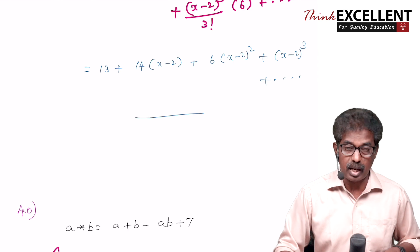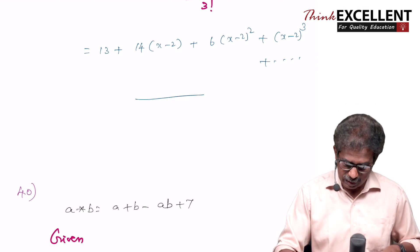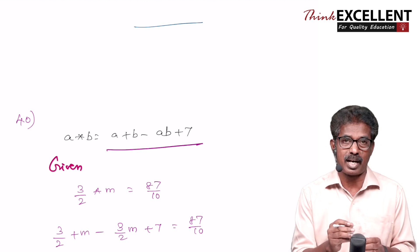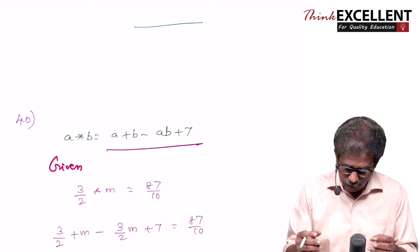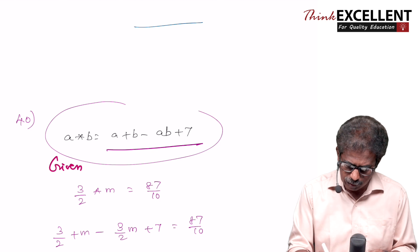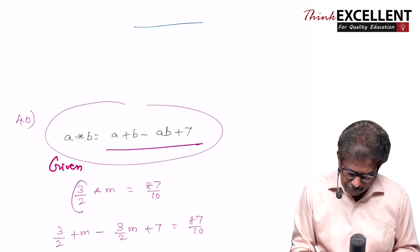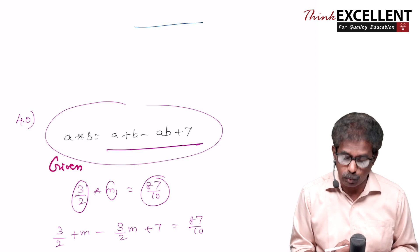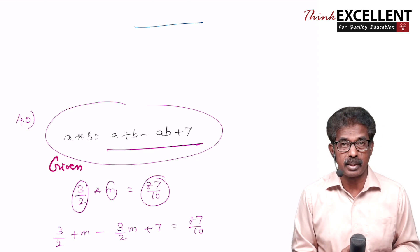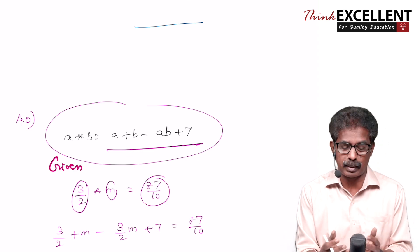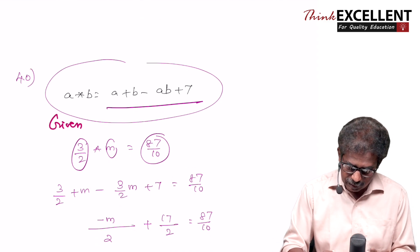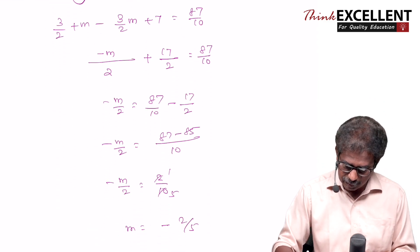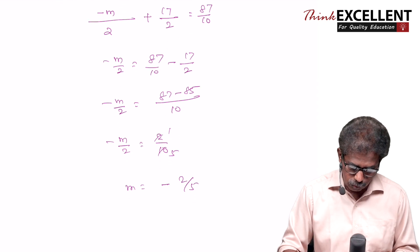Question 40 is a star operation question — very easy. A star B is defined as A + B − AB + 7. A equals 3/2 and B equals M. Equate the answer to 87/10. Substitute A and B values — you will get M = −2/5.